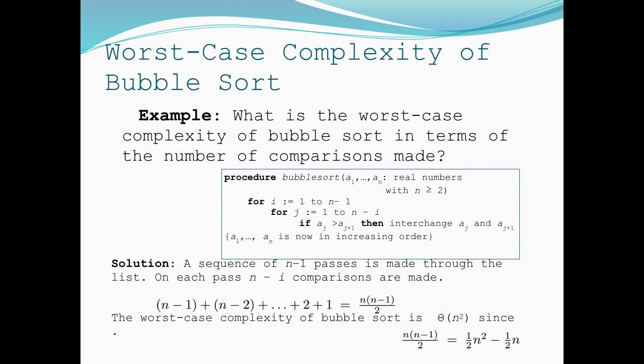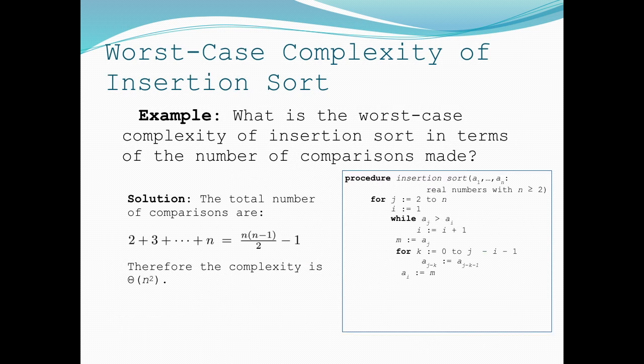That's why we say the time complexity for bubble sort is given as n to the power two. So every time you see two nested loops, the time complexity is going to be n to the power two. If you see three nested loops, the time complexity is going to be n to the power three.